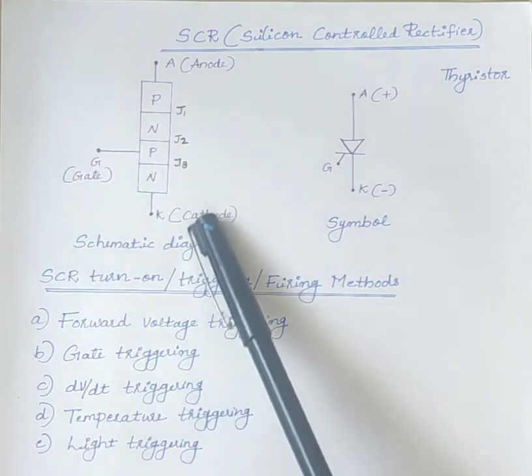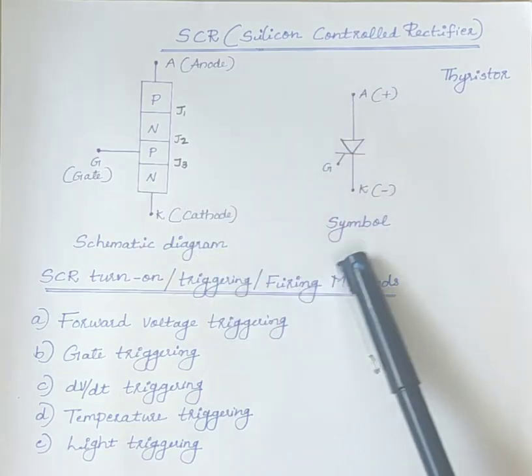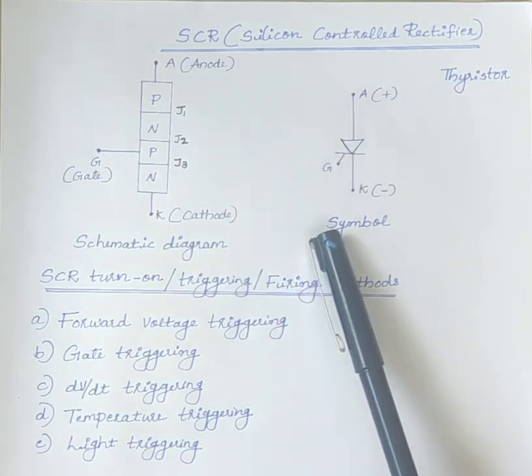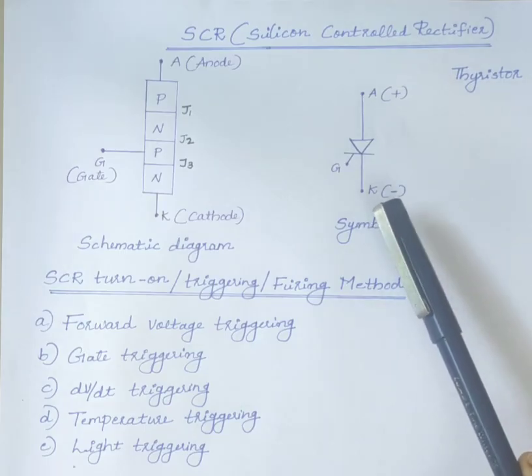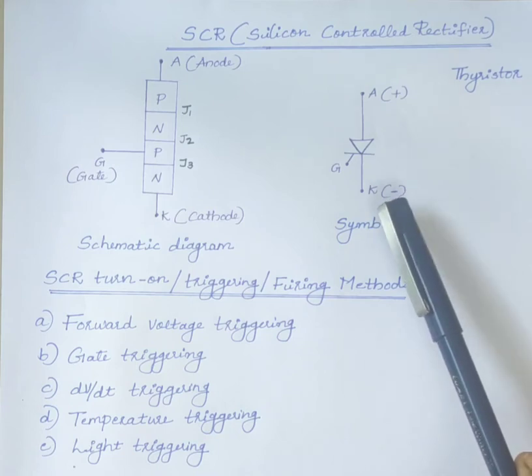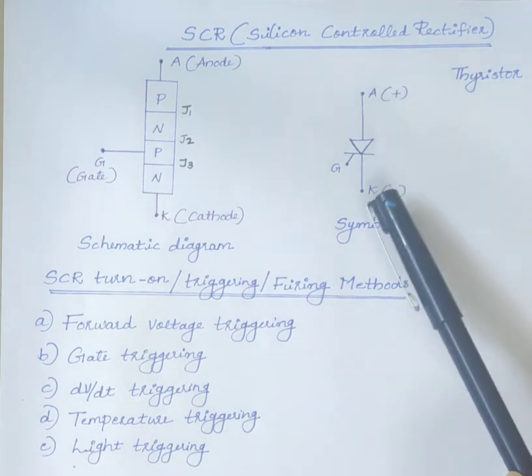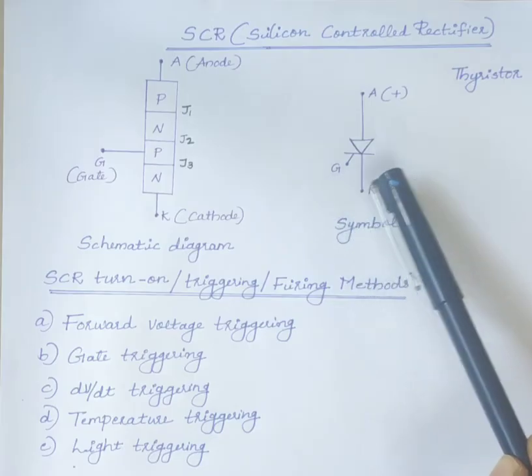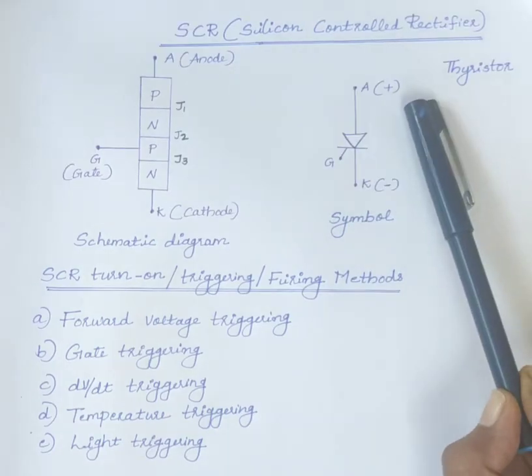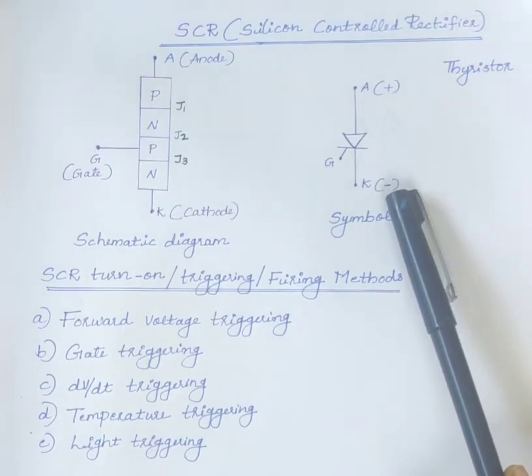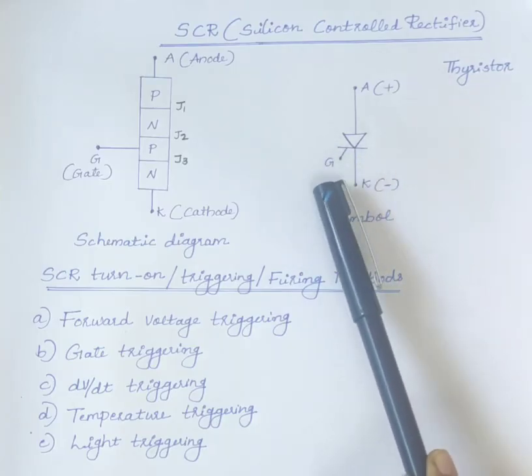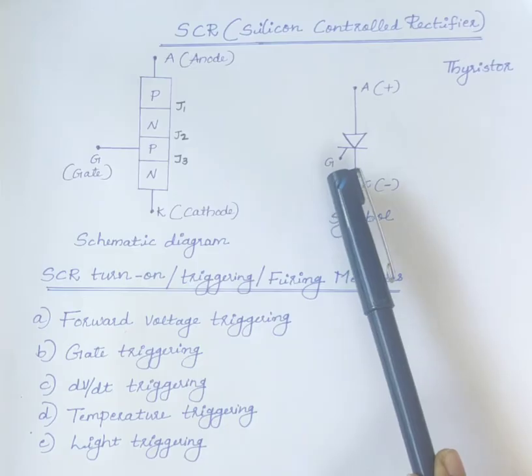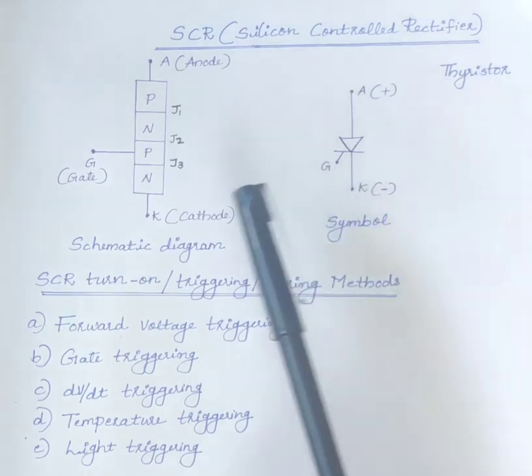The schematic diagram and symbol of SCR is shown here. SCR or Thyristor is basically a switch, a semiconductor switch with three terminals: anode, cathode and gate. Anode is the positive terminal, cathode is the negative terminal and this third terminal, gate, is known as the control terminal.